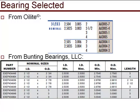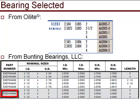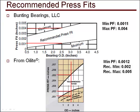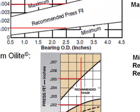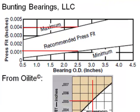Which limits do I choose, and what should the dimensions for the hole and the journal be? Notice that Oilite has two choices for ID and OD limits, while Bunning has only one choice for each. We are going to use the limits that are common between the two. We will choose AA3004-2 from Oilite or EXEP404848 from Bunning. Next, we need to determine the press fit limits we should use. Notice that Bunning uses slightly tighter limits than Oilite. We are going to choose the Bunning limits for this problem.